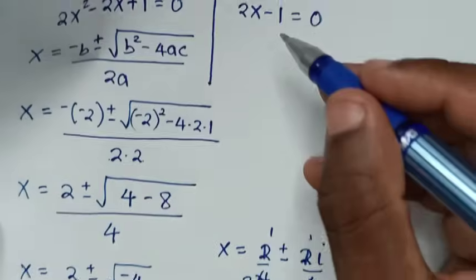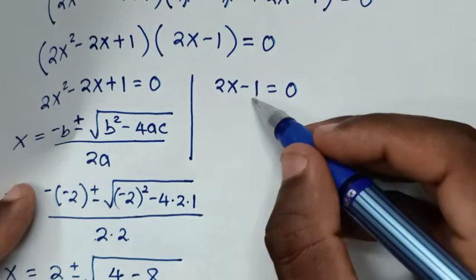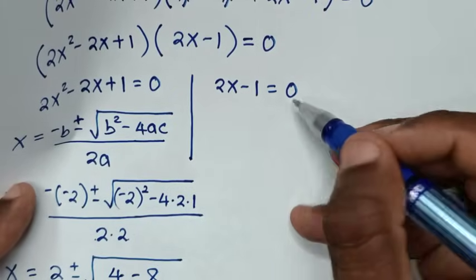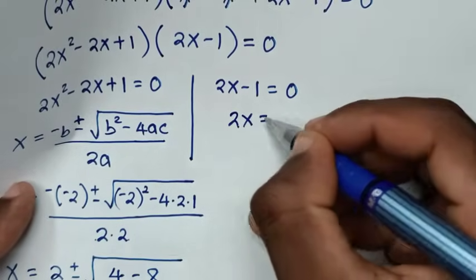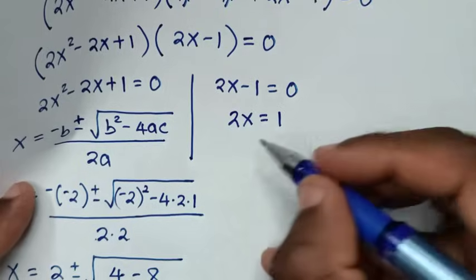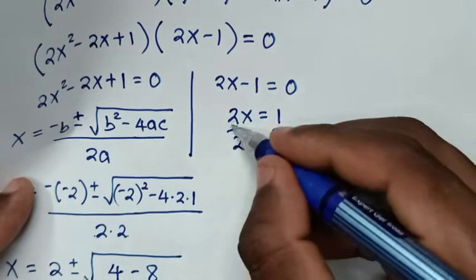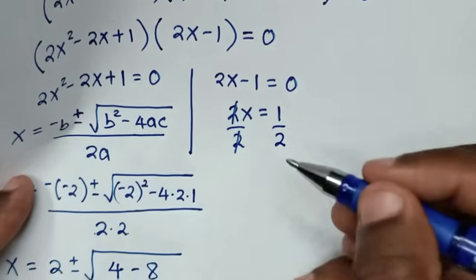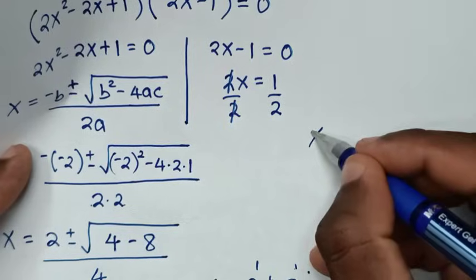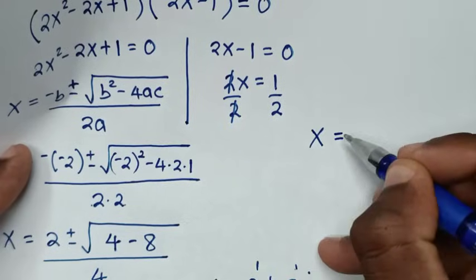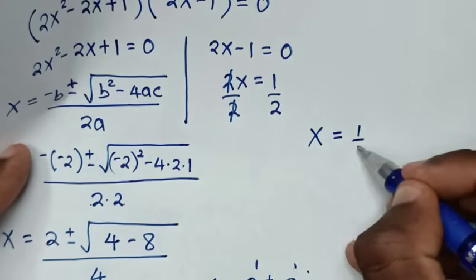To solve from the second solution, we take negative 1 to the right side: 2x equals 1. Dividing both sides by 2, we get x equals one half.